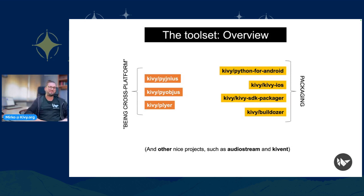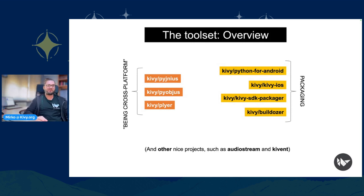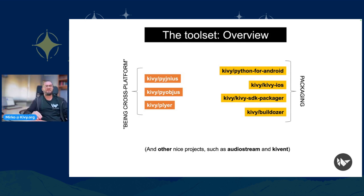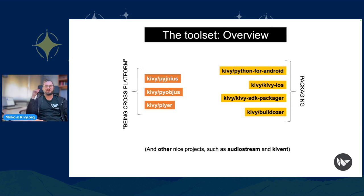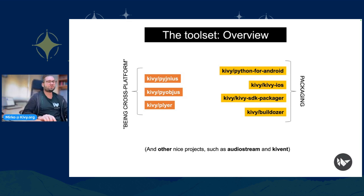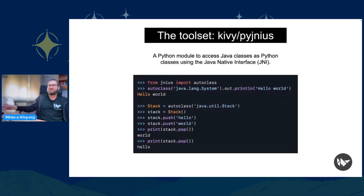I think of it as the 'bindings platform' on one side and the packaging part on the other. The bindings platform is PyJNIus, PyObjus, and Plyer. On the other side we have Python-for-Android, Kivy-iOS, Kivy SDK packager, and Buildozer. We also have other nice projects such as Kivent and Keyland. Let's start with the first part of the toolset.